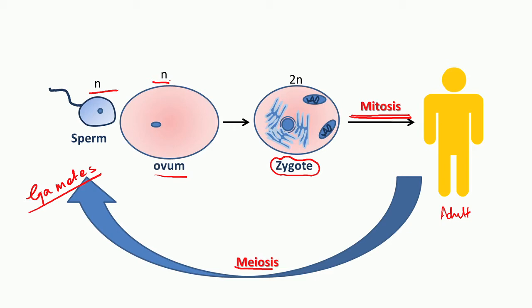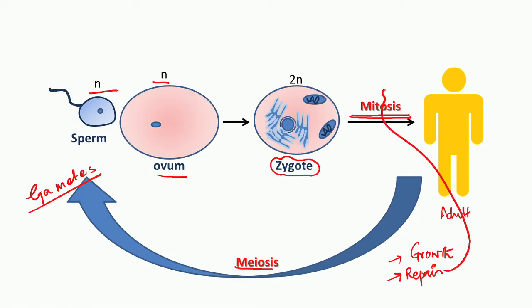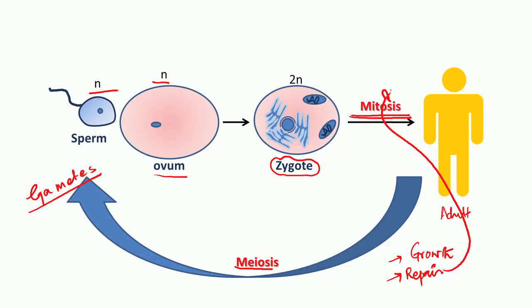Today let us talk about mitosis. What is the importance of mitosis? As I mentioned, it not only helps in the growth of an organism — I've taken the example of human beings, but the same applies to almost all other eukaryotic organisms. We also find that mitosis is important for repair. For example, if you have injured yourself and there is a wound on your skin, after a few days the wound gets repaired and fresh skin reappears. This kind of repair mechanism is possible because of mitosis. Similarly, lizards can easily regrow their clipped tails because the cells in the tail undergo rapid cell division through mitosis.